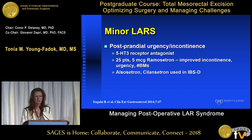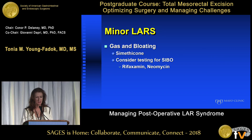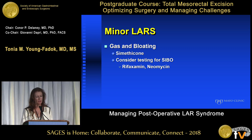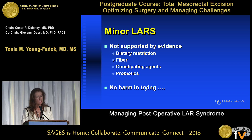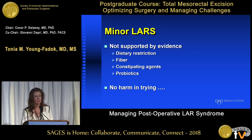Postprandial urgency or incontinence can actually be helped by a 5-HT3 receptor antagonist, with some of the better data being with ramosetron. Gas and bloating may be an issue for some patients, and over-the-counter preparations of simethicone can be helpful. This can also be a symptom of small intestinal bacterial overgrowth, and the patient can be tested and treated with either rifaximin or neomycin. Common approaches include dietary restriction, fiber to bulk up the stool, constipating agents, or probiotics — no good data for any of them, but everyone has anecdotal evidence for trying them.